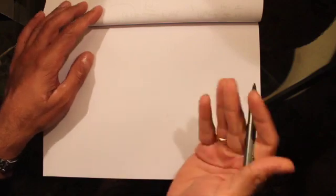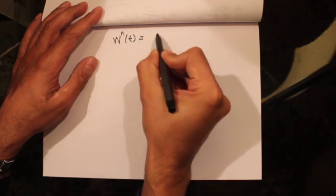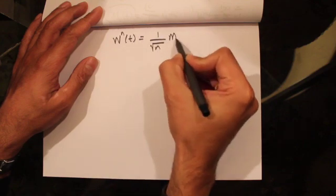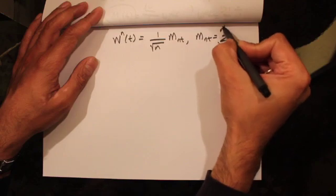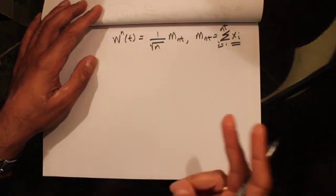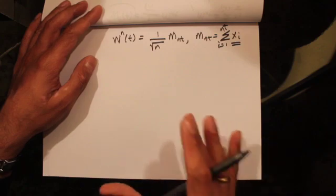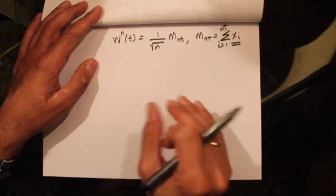Today I would like to continue our discussion on Brownian motion. So far we have been developing theory to help us construct a Brownian motion. In the last few lectures we talked about the scale symmetric random walk, given by W_n(t) = (1/√n) * M(nt), where M(nt) = Σ(i=1 to nt) x_i, and the x_i's were a series of random variables taking values +1 or -1 depending on whether the i-th coin toss was a head or a tail.